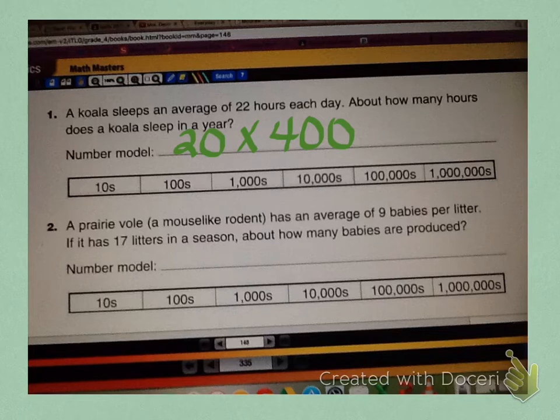So if we look at the first problem, we have a koala sleeps an average of 22 hours each day. About how many hours does a koala sleep in a year? So first of all, you'll notice that I changed the 22 to 20 because I rounded that, and then I am multiplying that times 400. Can anyone think of why I might be multiplying that times 400? If you will recall, the question is asking you how many hours in a year. So there are 365 days in a year, and if we round that to the nearest hundred, it would be 400. That's where that came from. So we would take 20 times 400, and of course that's going to equal 8,000. And then we look at the little boxes below that, and we can determine that our answer is going to be in the thousands. So we would circle that.